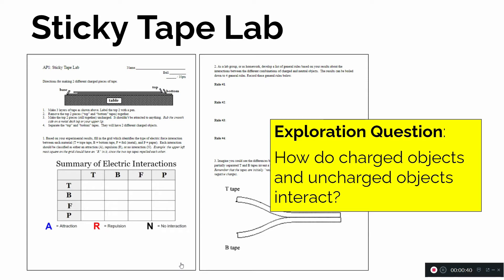So did they attract? Did they repel? Was there no discernible attraction or repulsion? In this video, I'm going to talk about some of the general rules you should have been able to decipher and figure out based on your observations and the data you collected.